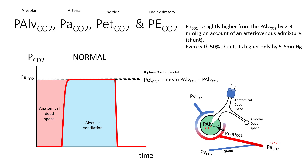In a normal capnogram, the end tidal — that means the last portion of CO2 sensed by the CO2 sensor — will be equal to the P alveolar CO2. Since you do not have much alveolar dead space, your average P alveolar CO2, meaning the combination of the green area and the white area, should be equal to the P alveolar CO2. If your phase 3 is horizontal, P end tidal equals your P alveolar CO2 and your mean P alveolar CO2.